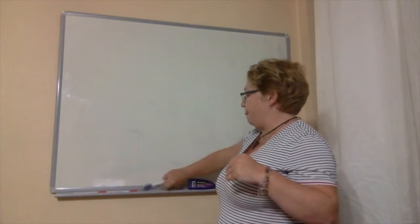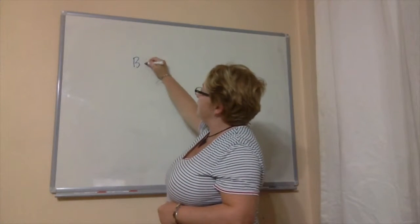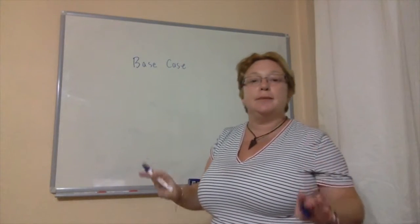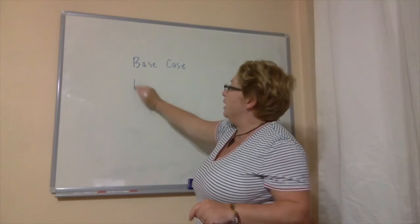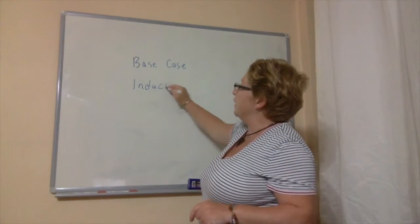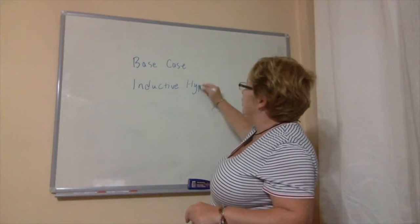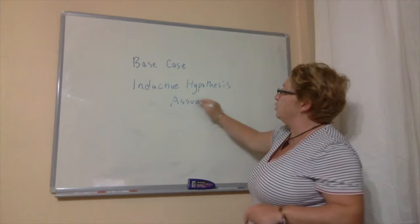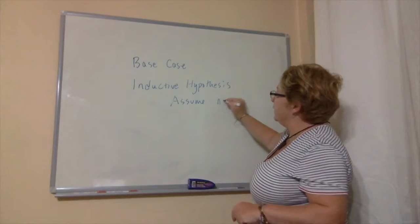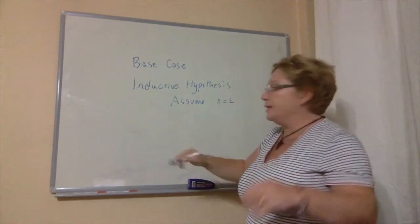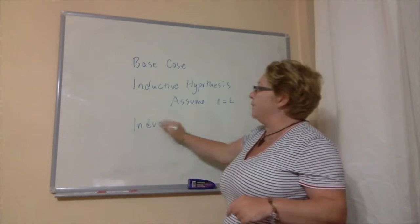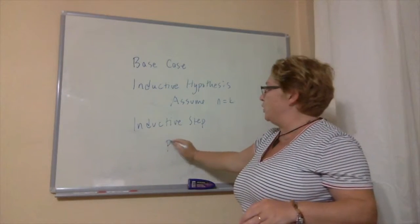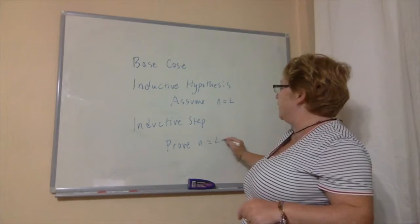There are three parts. First, the base case, where we prove the statement for the smallest element in our set. Then we establish an inductive hypothesis, where we assume the statement is true for n equals some constant k. Finally, we prove the inductive step, where using the inductive hypothesis we show that the statement is true for n equals k plus 1.